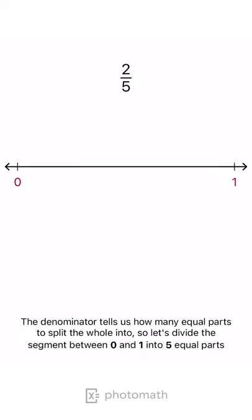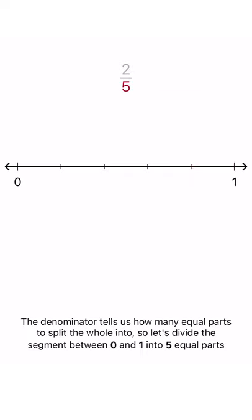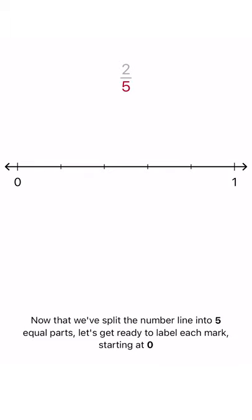The denominator tells us how many equal parts to split the whole into, so let's divide the segment between zero and one into five equal parts. Now that we've split the number line into five equal parts, let's get ready to label each mark, starting at zero.